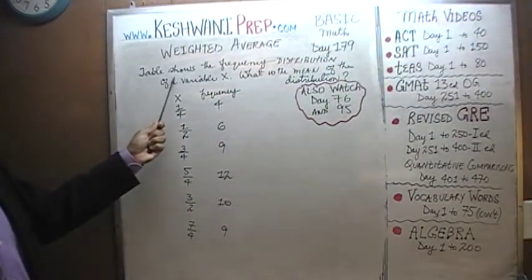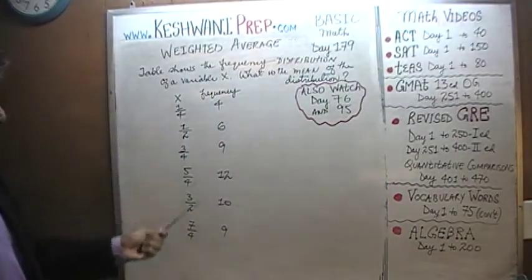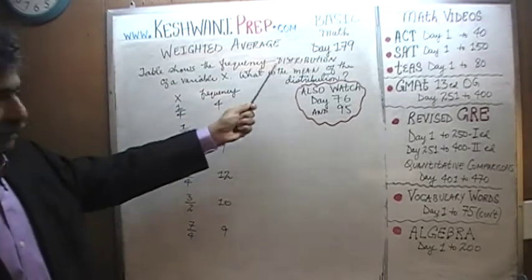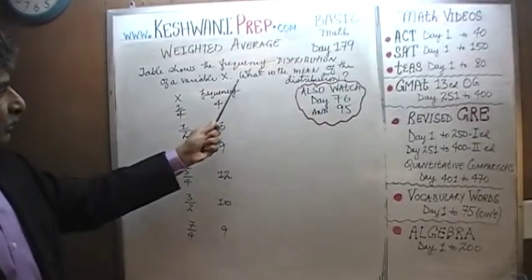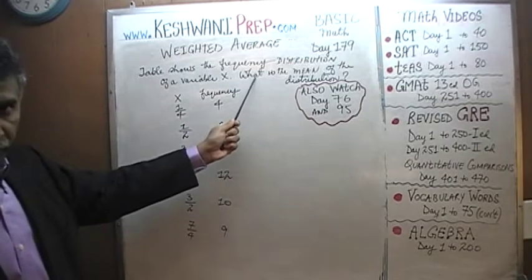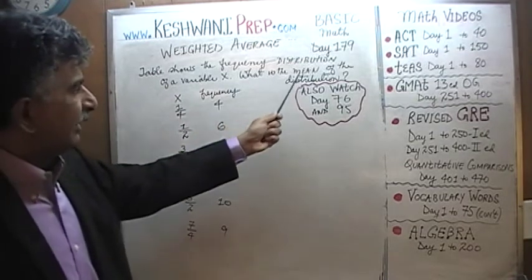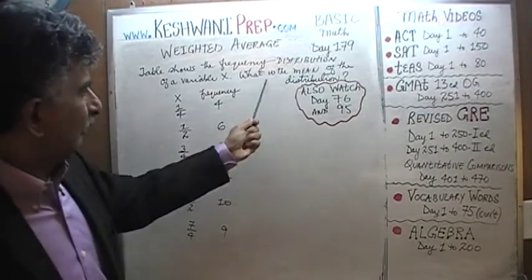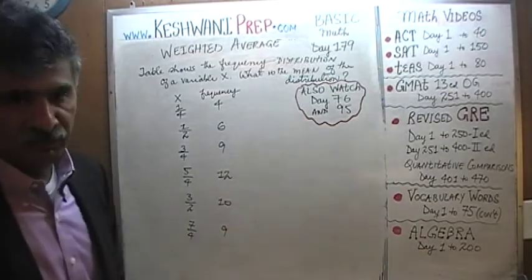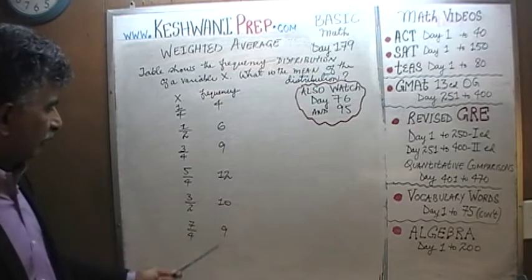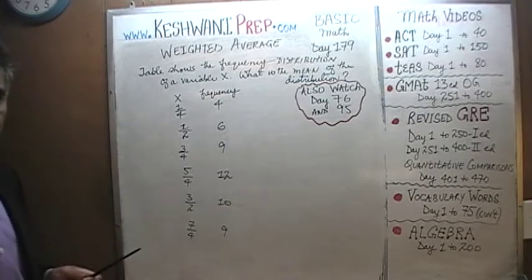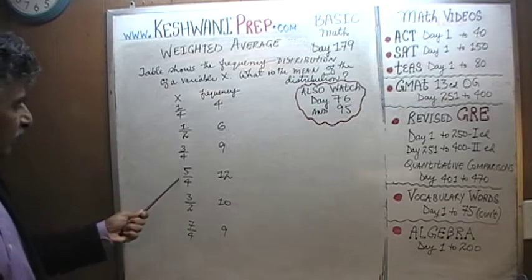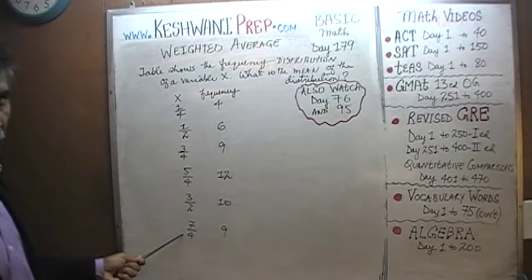It says the table below shows the frequency distribution of a variable x. The question is very simple and very straightforward — we have to find the mean of the distribution. The variable x takes on the values of one quarter, one half, three quarters, five quarters, three halves, and seven quarters.